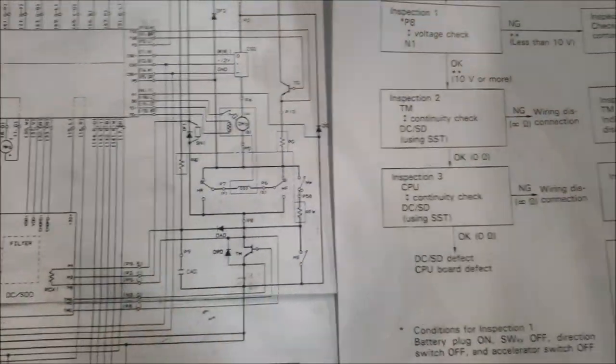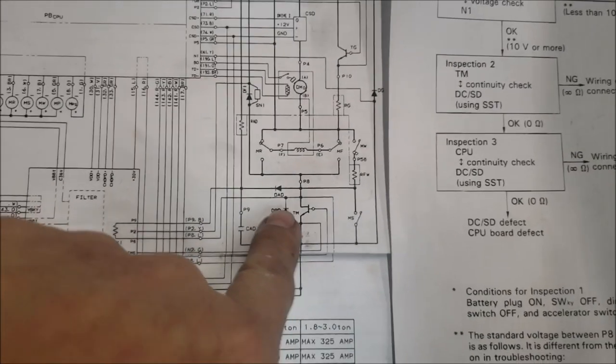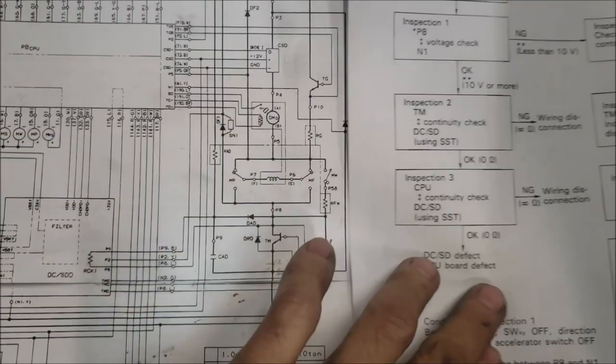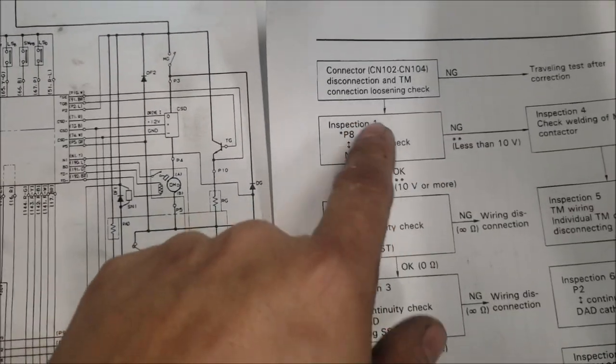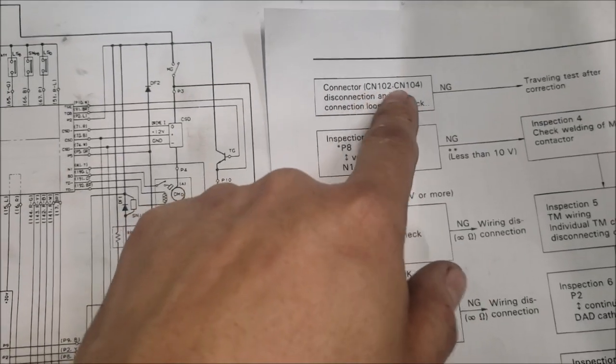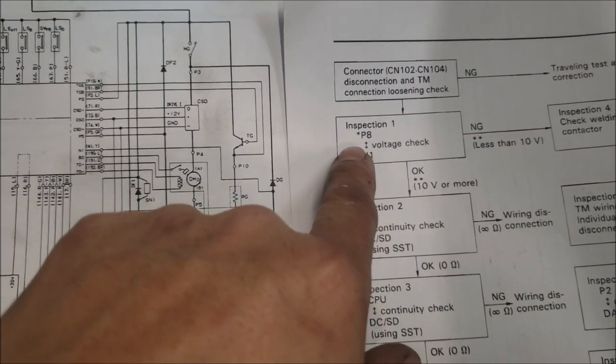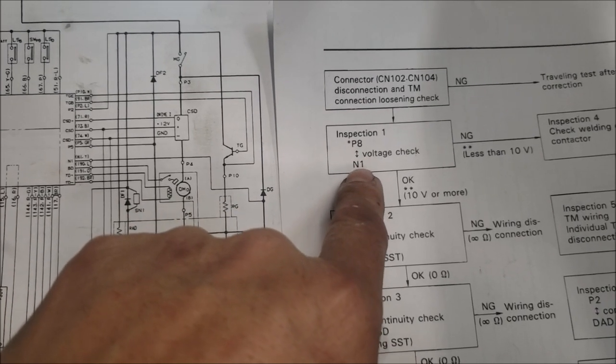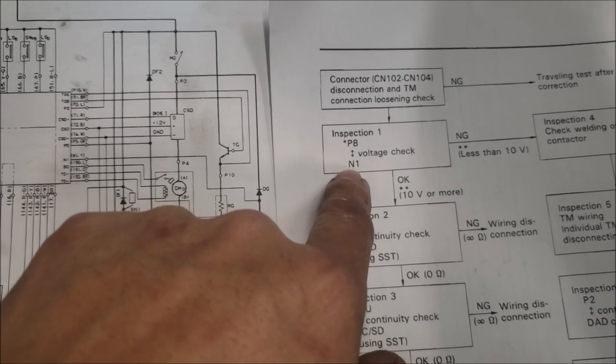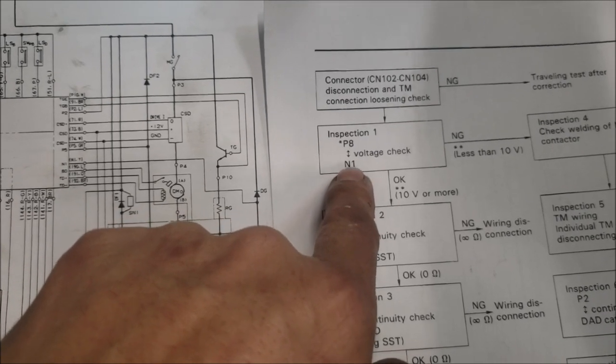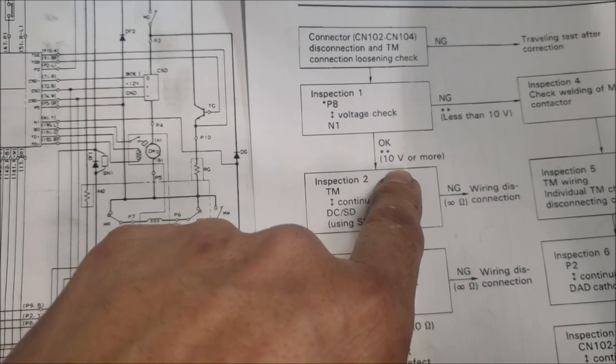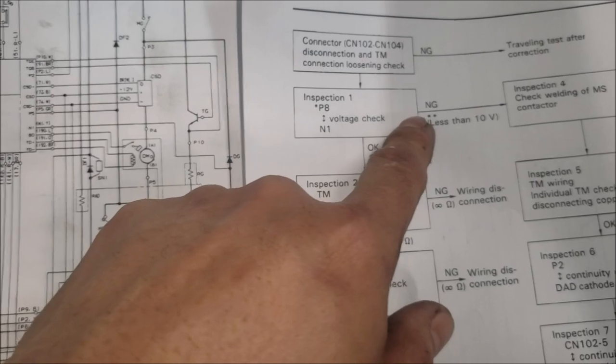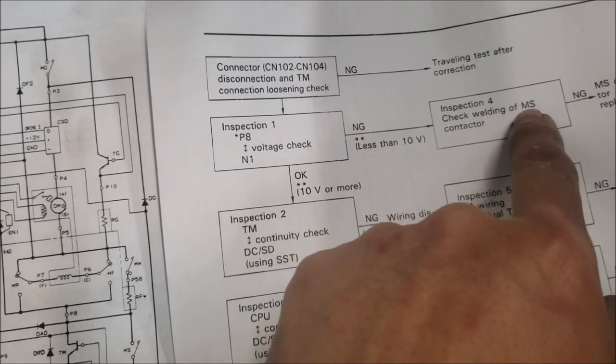Now we're looking at the schematic and diagnostic flowchart for this truck. The first thing the book suggests is checking the connection to the TM - everything checks out. The next step is to check the voltage between p8 and the negative terminal, which is directly connected to the battery. More than 10 volts should be good, less than 10 volts would be bad.